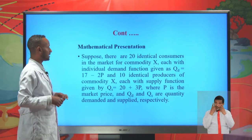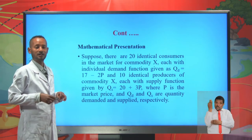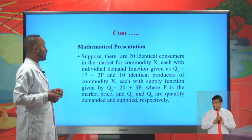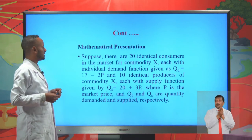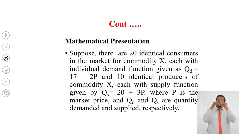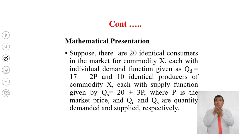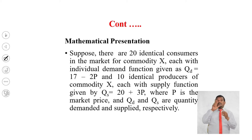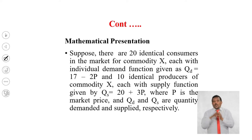Now let's see the mathematical presentation of market equilibrium. Suppose there are 20 identical consumers in the market for commodity X, each with individual demand function given as quantity demanded equals 70 minus 2P. And there are also 10 identical producers of commodity X, each with supply function given by quantity supplied equal to 20 plus 3P, where P is the market price.